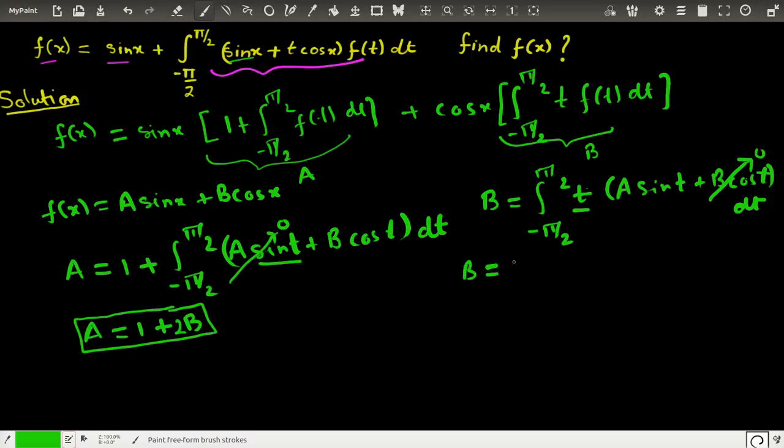So the definition, the equation which remains is we have minus π/2 to plus π/2, this is A outside, and this would be t into sin(t) dt.